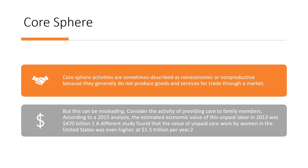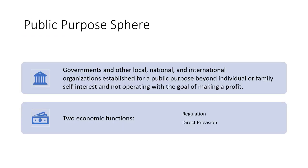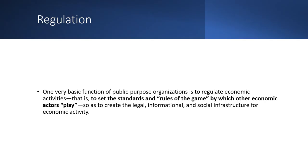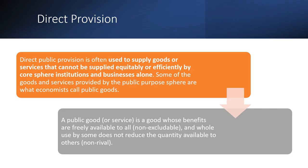A different study found that the value of unpaid care work by women in the United States was even higher at $1.5 trillion per year. Meanwhile, the public purpose sphere includes governments and other local, national, and international organizations established for a public purpose beyond individual or family self-interest, and not operating with the goal of making a profit. It has two economic functions: regulation and direct provision. A very basic function of public purpose organizations is to regulate economic activities — to set the standards and rules by which other economic actors play — so as to create the legal, informational, and social infrastructure for economic activity.